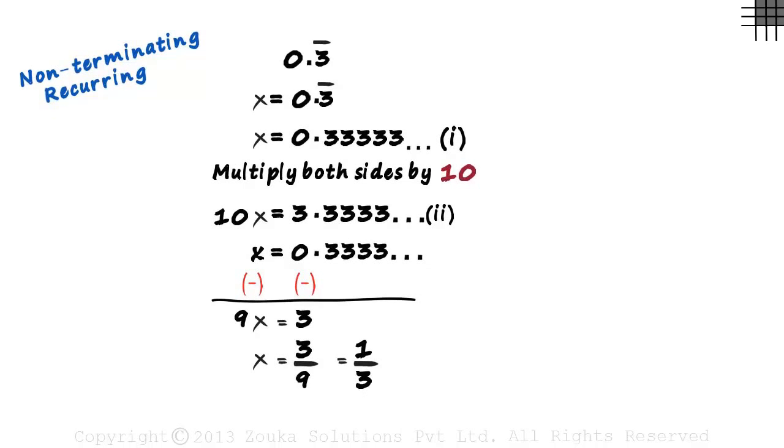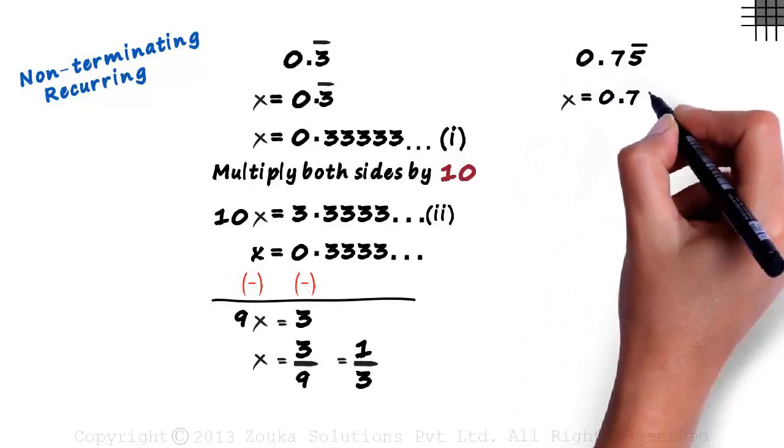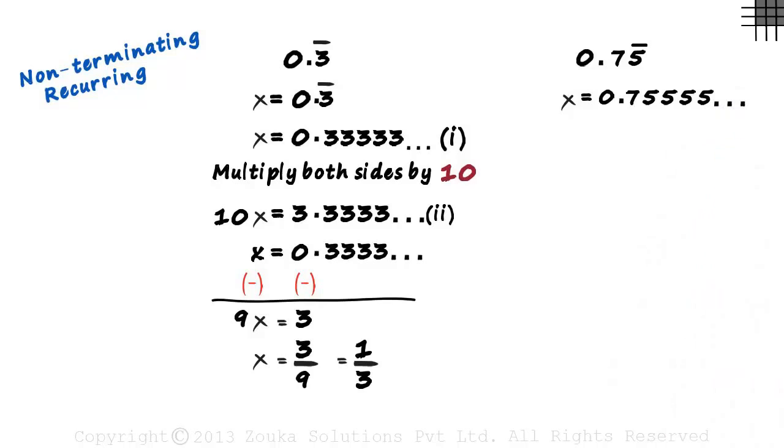But what if we had a mixed recurring decimal like 0.75 with a bar over 5? Here x would equal 0.75555 and so on. The digit 7 is not repeated. Let this be our first equation. To convert this into P by Q form, we have to eliminate 5555 which is the recurring part. This one's interesting.